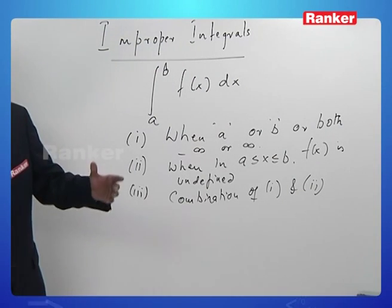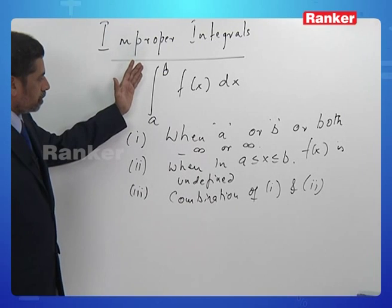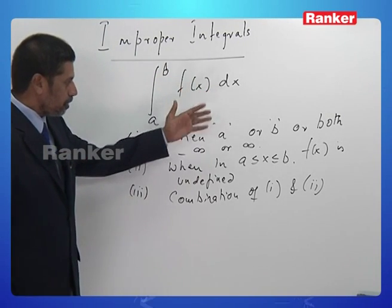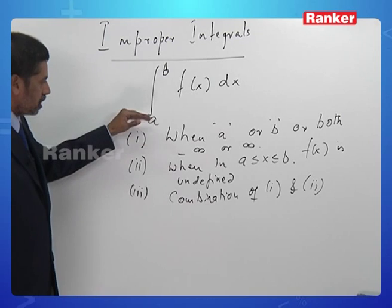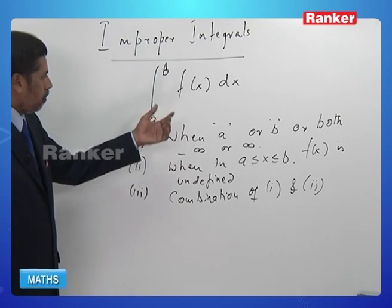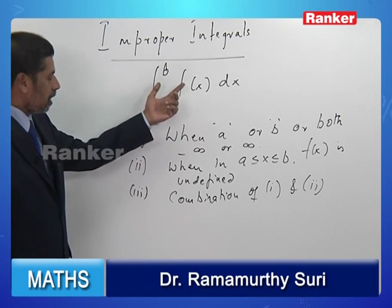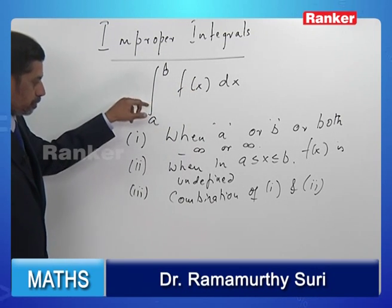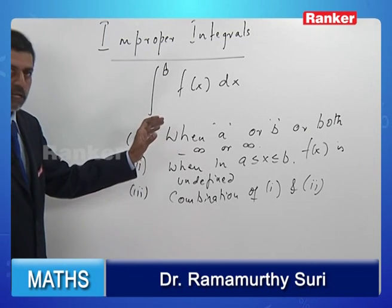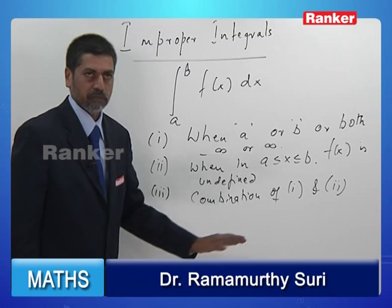Therefore, what we can say is that any integral of the type ∫a to b f(x) dx is called improper when a is minus infinity or b is infinity or both, when f(x) becomes undefined anywhere in the interval a to b, and a combination of both these things can become what is called a Type 3 improper integral.